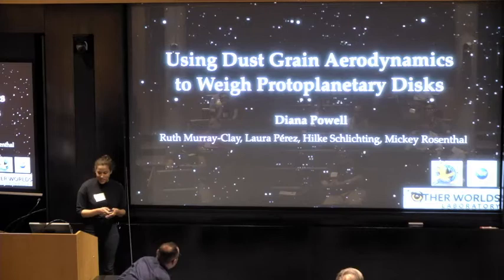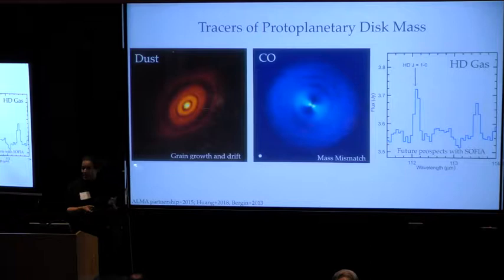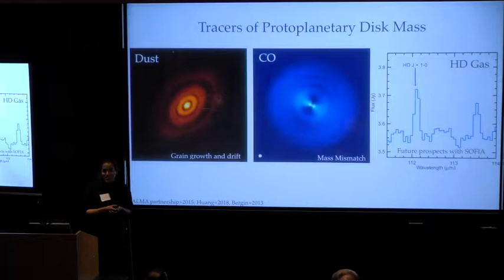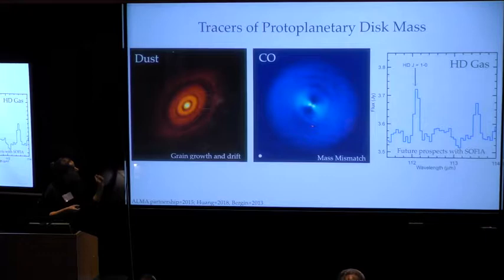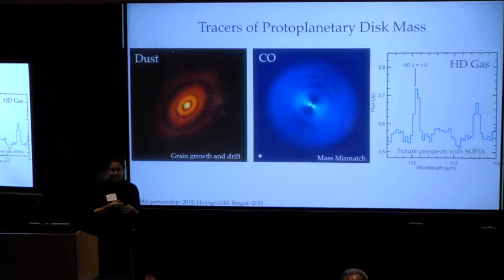So the most common observational tracers of mass in disks are dust or gas, typically CO gas, as these are relatively easy to observe. However, we know that processes such as grain growth and drift should alter the ISM dust to gas ratio from typically assumed values. Furthermore, there are several lines of evidence that indicate that CO is depleted or missing in disks.